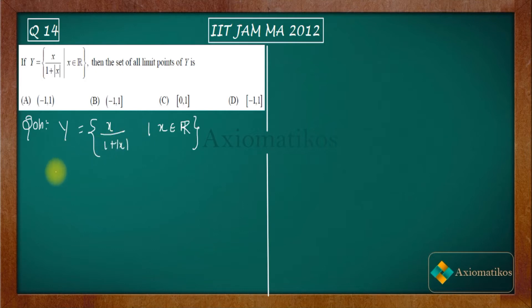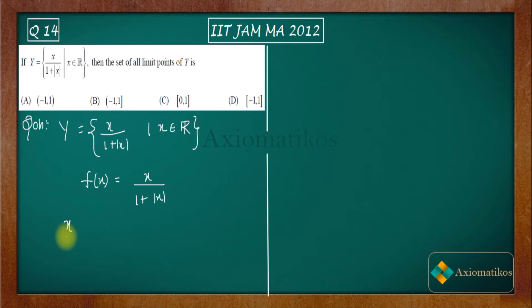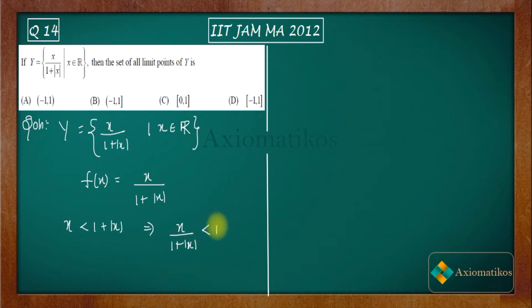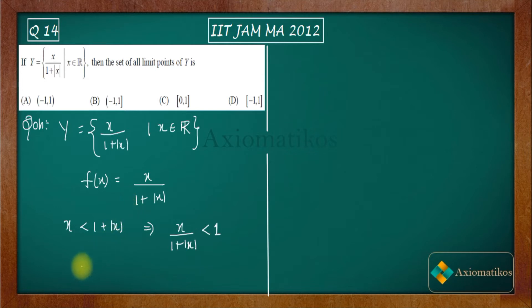If we consider f(x) = x/(1 + |x|), let us see what happens. For whatever x you choose from ℝ, the numerator x will always be less than the denominator (1 + |x|). So no value of x will make this ratio equal to 1 — it cannot exist. That means x/(1 + |x|) is always less than 1. Also, the denominator is always positive.